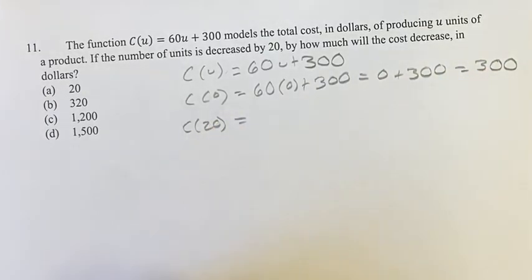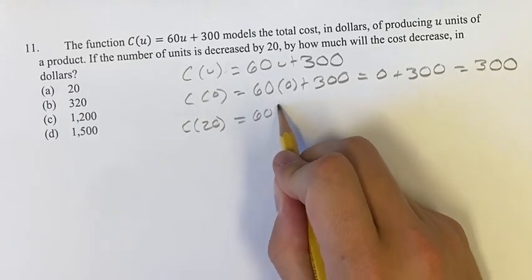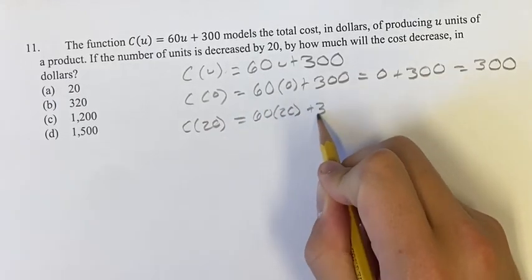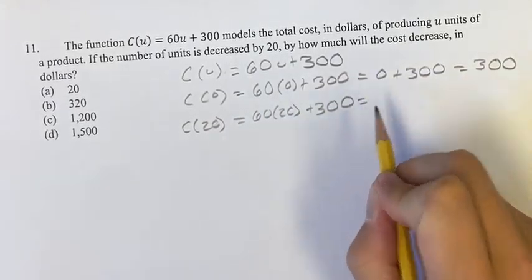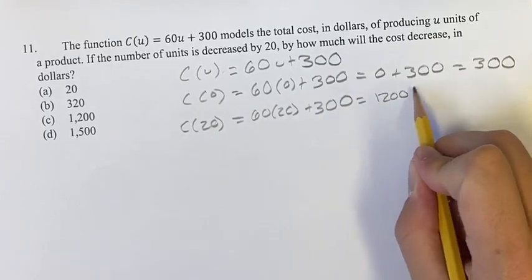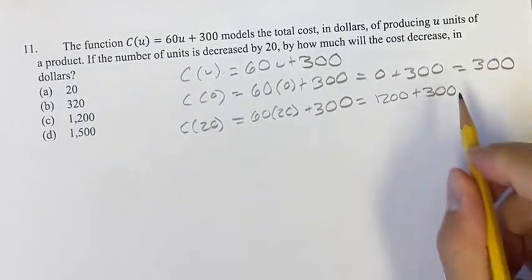Plugging in 20 for u instead gives us 60 times 20 plus 300, which equals 1,200 plus 300, which equals 1,500.